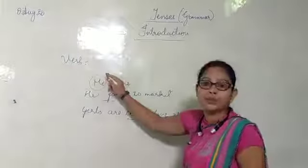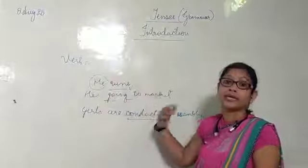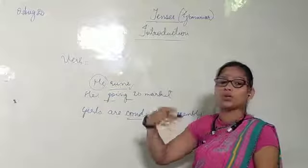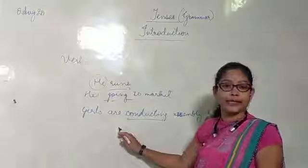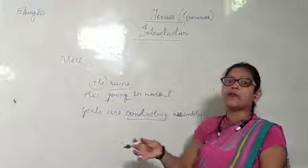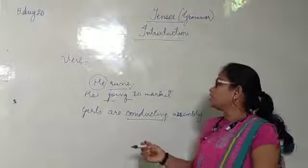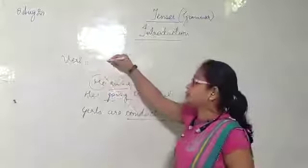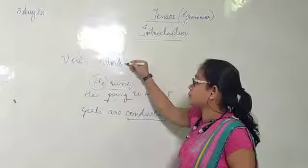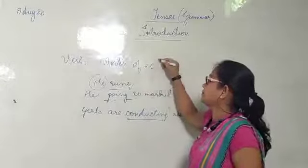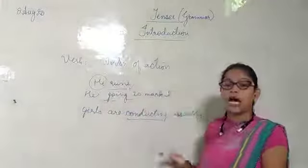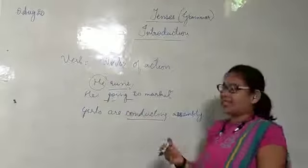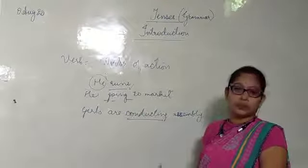In first sentence he runs. Second, he is going to the market. And in the third sentence girls are conducting assembly. So class, the words of action are called verbs. Verbs are the action words.